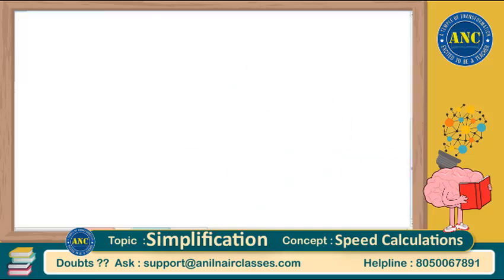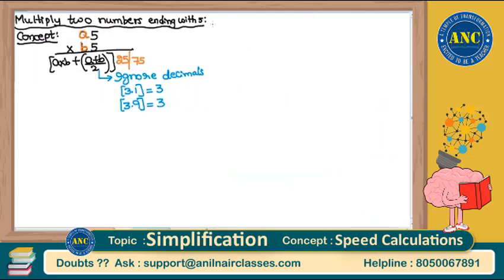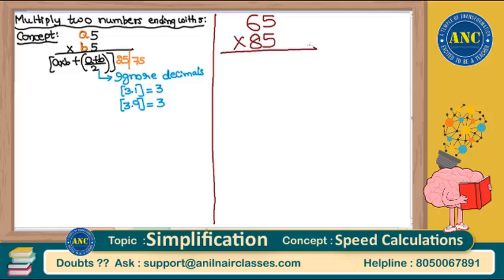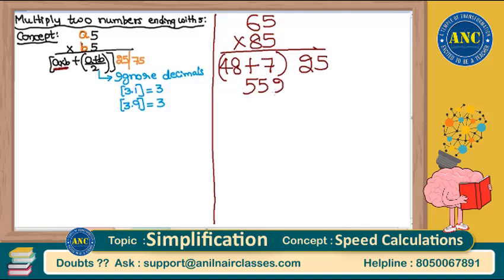Three examples in this logic. Example one: 65 × 85. A is 6, B is 8 — both even, so last two digits are 25. Next, a×b = 6×8 = 48, plus (a+b)/2 = (6+8)/2 = 14/2 = 7. So 48 + 7 = 55. Final answer is 5525.